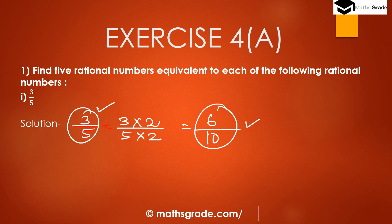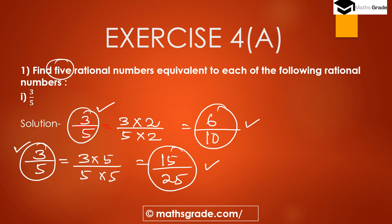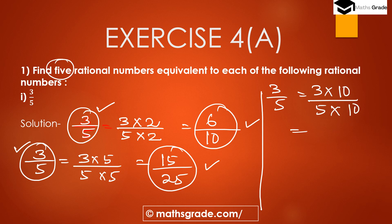That is the first equivalent rational number. For the second, if we multiply 3/5 by 5 in both numerator and denominator, we get 3×5=15 and 5×5=25, so 15/25. For the third, multiplying by 10: 3×10=30 and 5×10=50, giving 30/50.